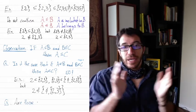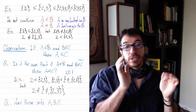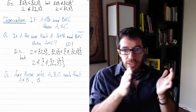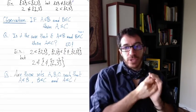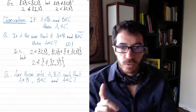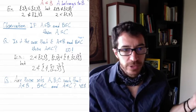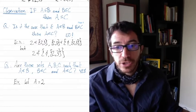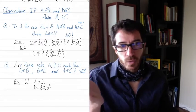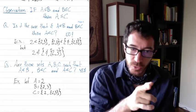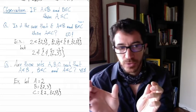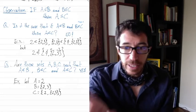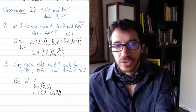But can you find examples A, B, and C such that A belongs to B, B belongs to C, and also A belongs to C? The answer is yes - there are examples like that, though a bit strange. For instance, if C is the set containing 2 on one side and the set {2,3} on the other side, then both A and B are members of C.